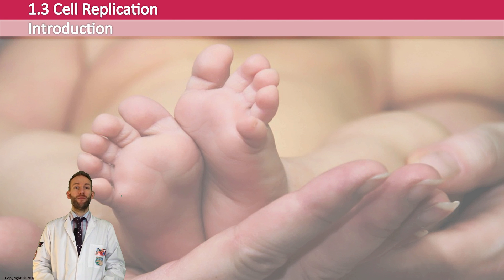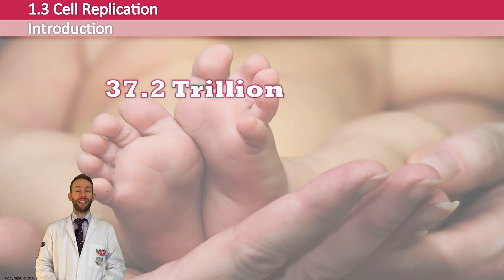In 2013, Eva Bianchicioni in Italy estimated that there are 37.2 trillion cells in an average human body. Now, that is a huge amount of cells and a lot of cell division, considering you started off as just one individual cell.